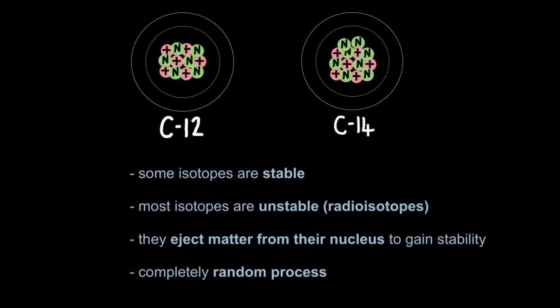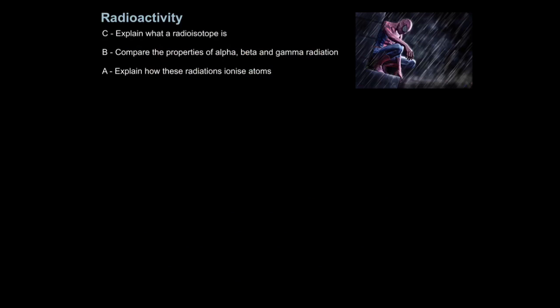What they eject and when they eject it is a completely random process. But the radiation we're going to be talking about in this tutorial is the matter they eject from their nucleus. And there are three things atoms can eject or rather radioisotopes can eject. So if you understand that radioisotopes are basically atoms which have an unstable nucleus then you can explain what a radioisotope is.